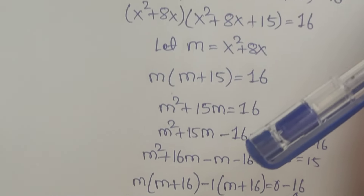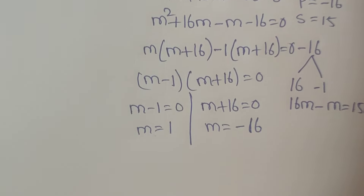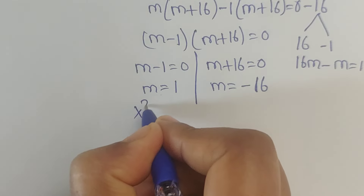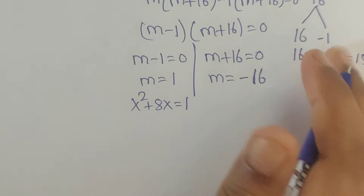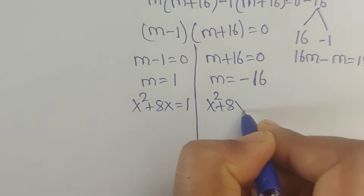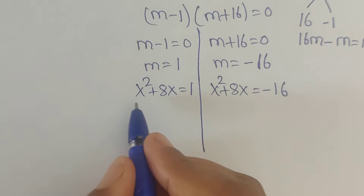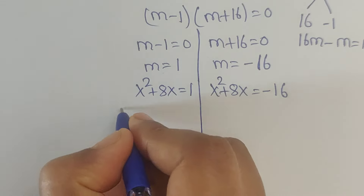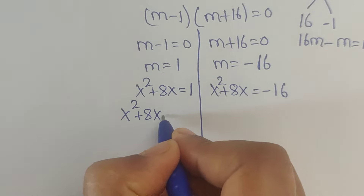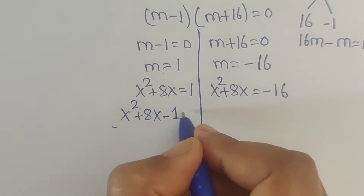We already considered m equals x squared plus 8x. Now recalling that substitution: for m equals 1, we get x squared plus 8x equals 1; and for m equals minus 16, we get x squared plus 8x equals minus 16. We will solve the first equation first. Writing the 1 to the left side gives x squared plus 8x minus 1 equals 0.